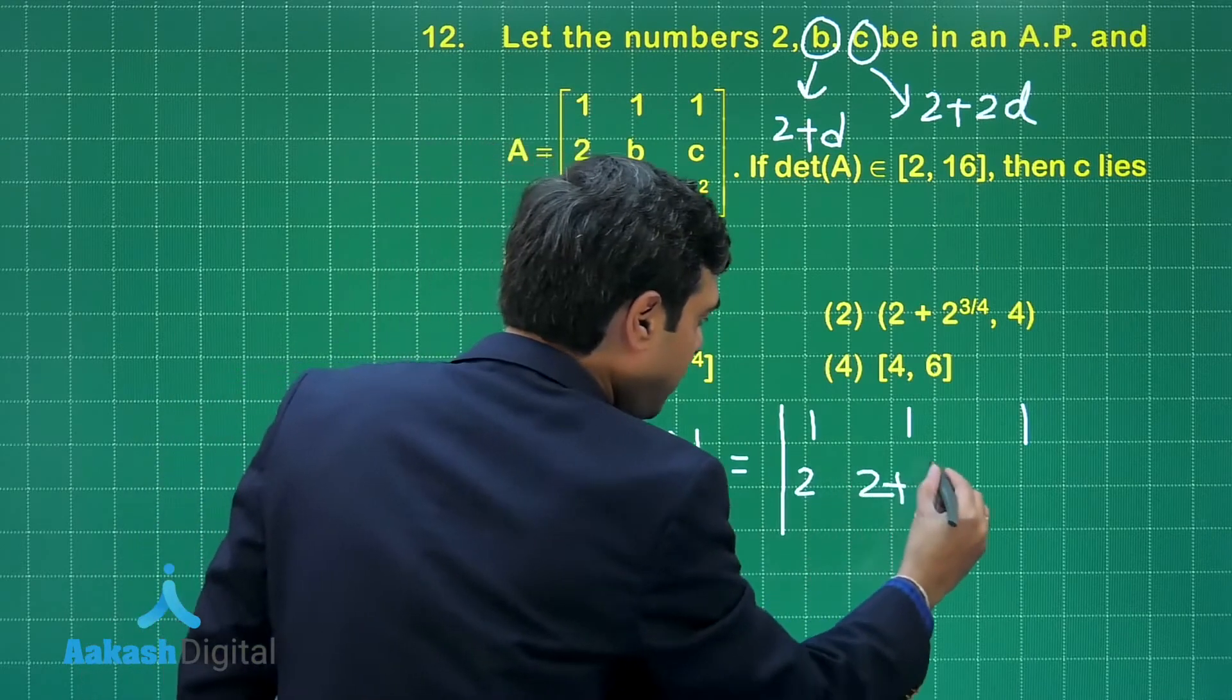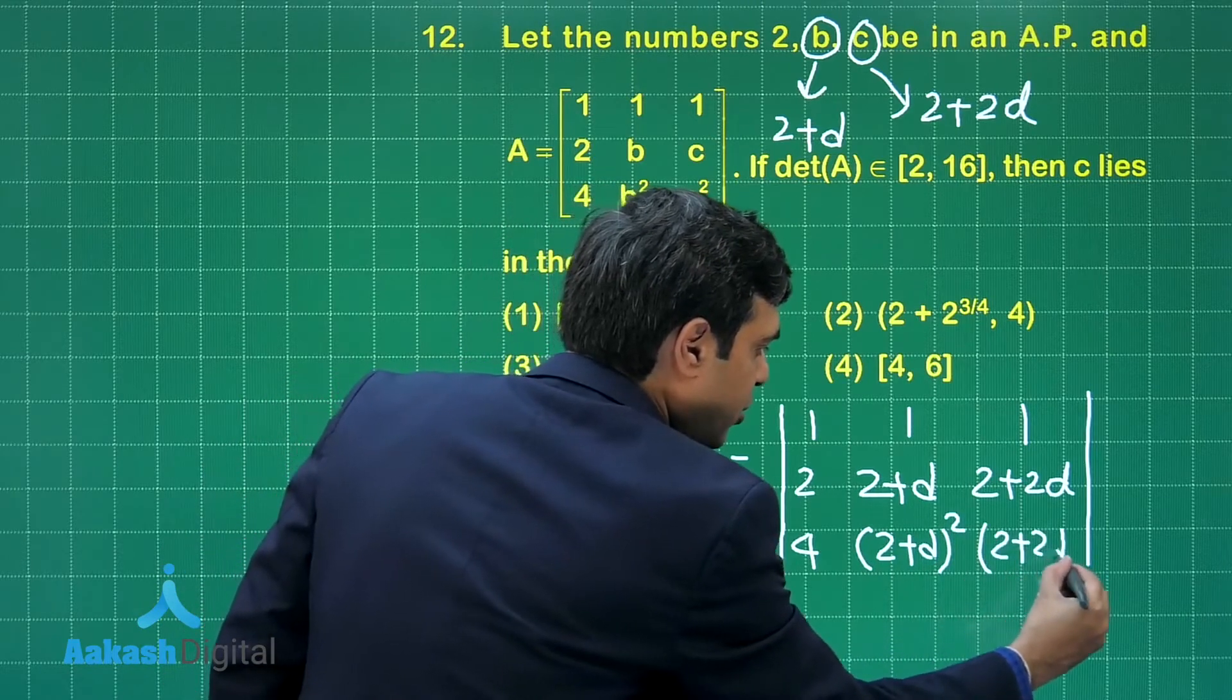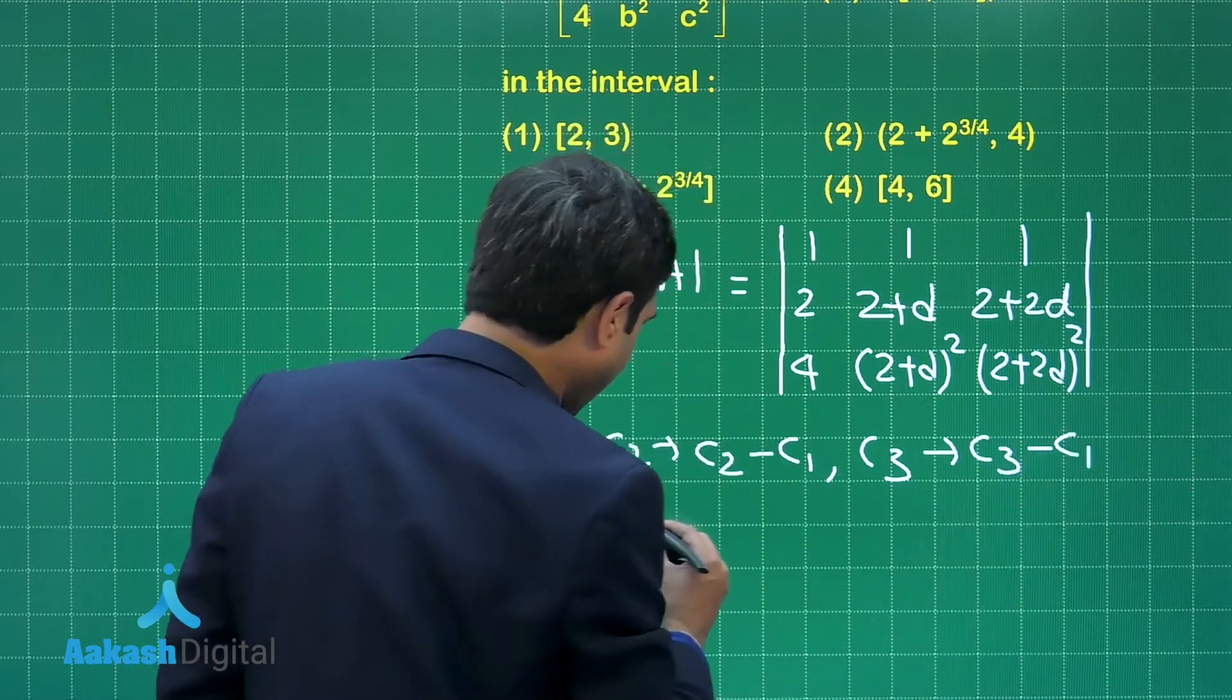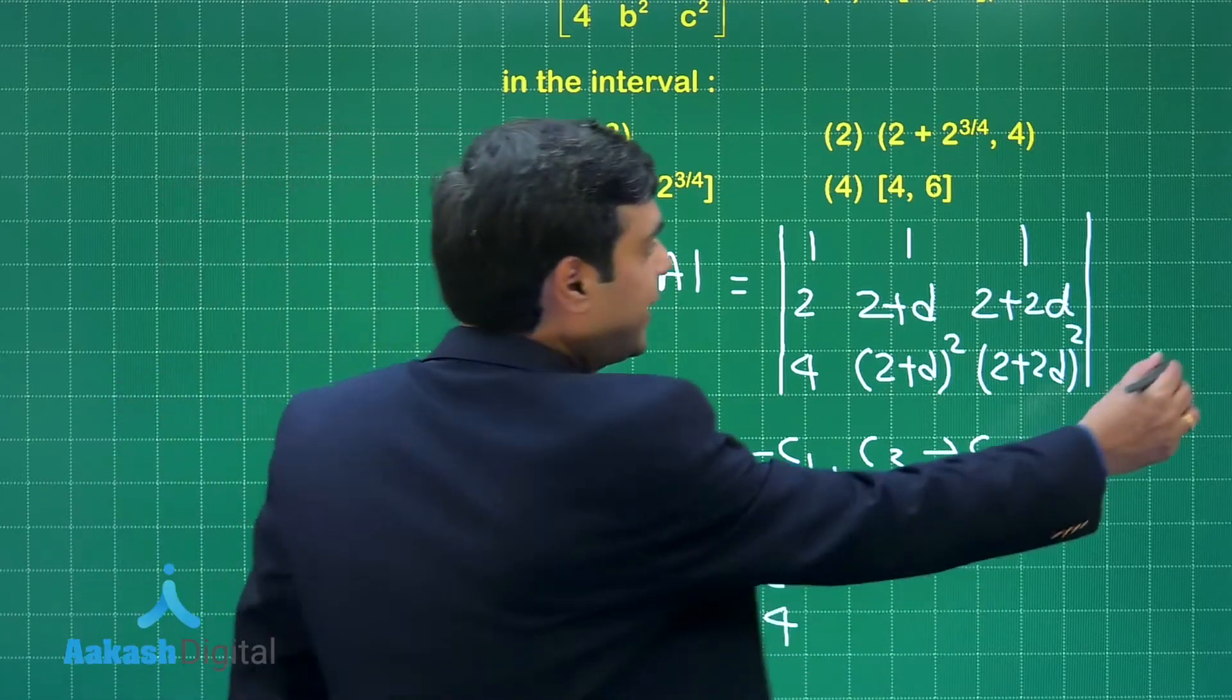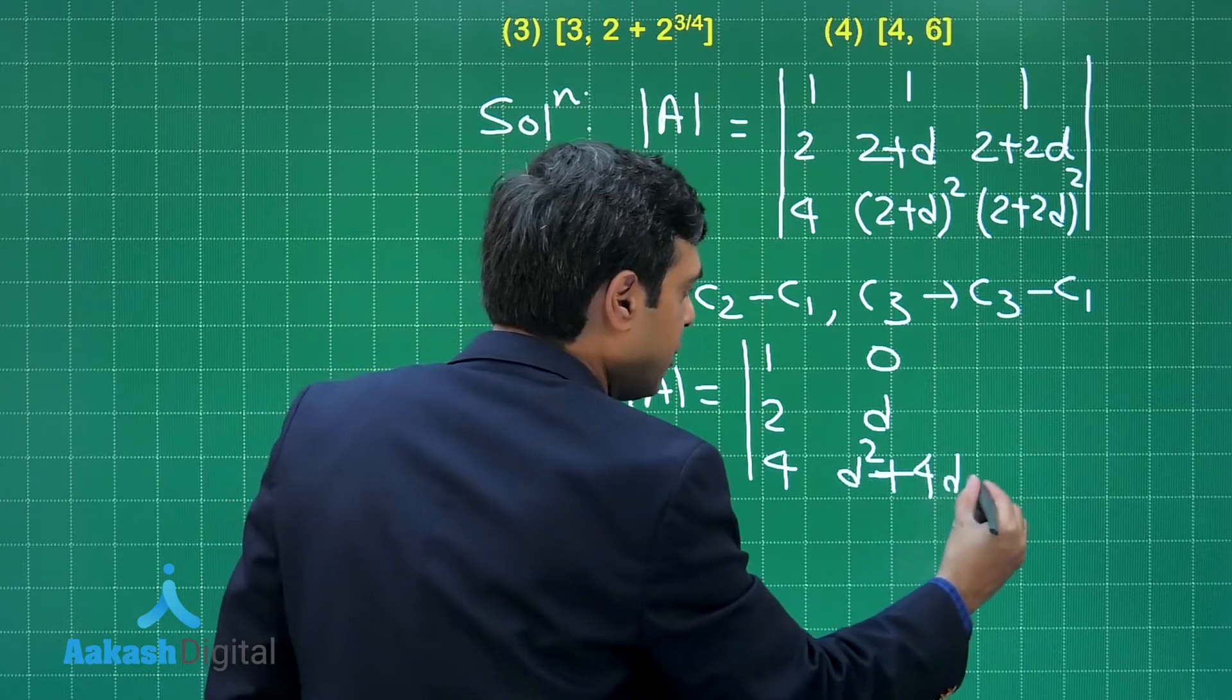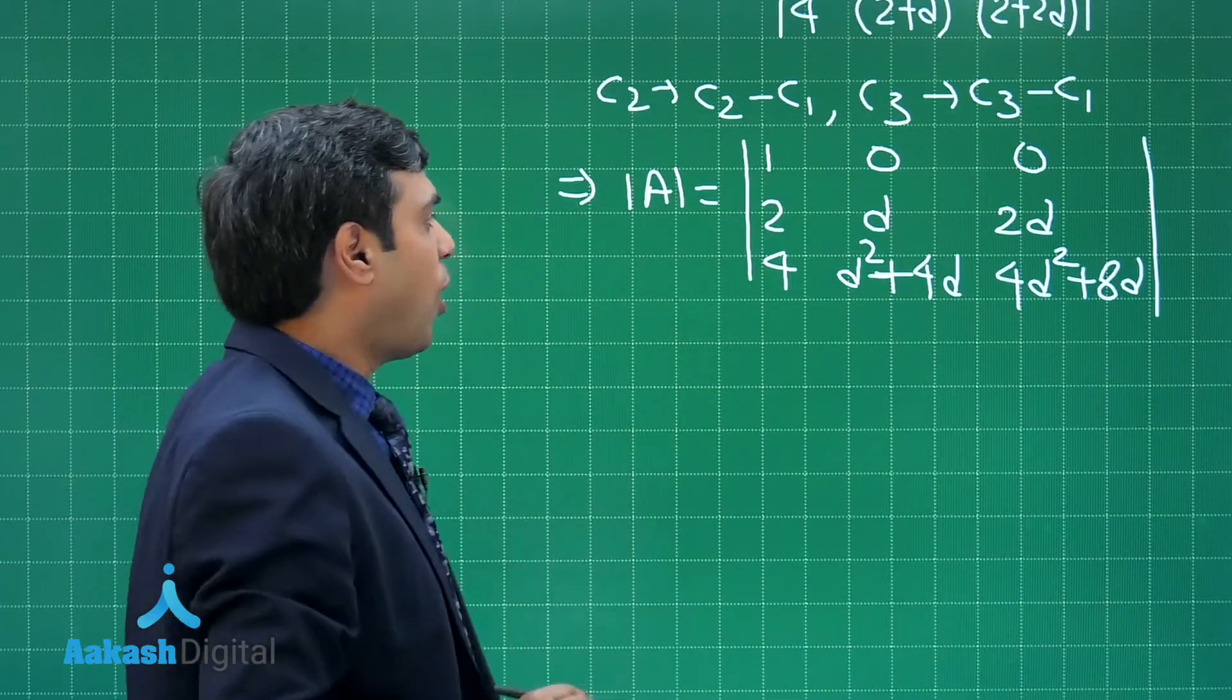So writing here 2 + D, 2 + 2D moving ahead 4, (2 + D)², (2 + 2D)². I am sure this is clear. Now applying C₂ replaced with C₂ - C₁ and C₃ replaced with C₃ - C₁. What we get? We are getting determinant A is equal to |1, 0, 0; 2, D, 2D; 4, D² + 4D, 4D² + 8D|. That is clear.